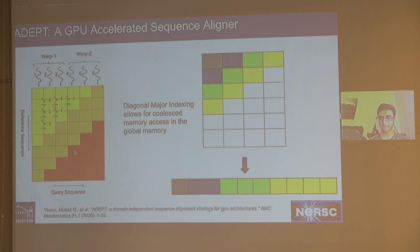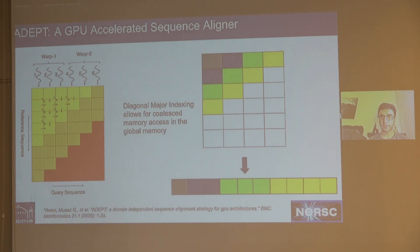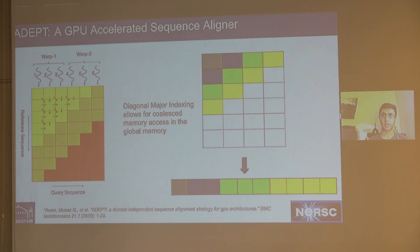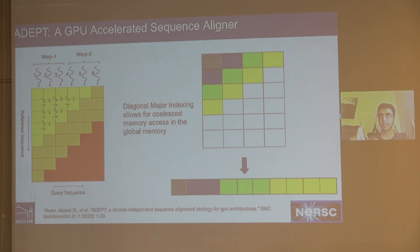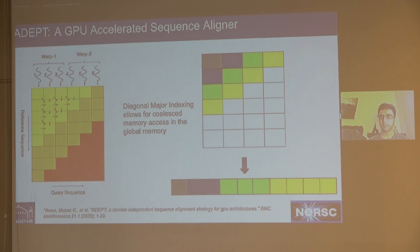Q: For the 3-bit optimization you mentioned, is it similar to CTEX from Micro 2020? A: I'm not familiar with that reference, but I can describe what we do. We use 3 bits per cell for the traceback matrix: one bit pointing up, one pointing left, one pointing diagonal, to track traceback pointers. One of our PhD students implemented this to keep track of those pointers in a compressed matrix. That work is in the process of being published and should be out soon.